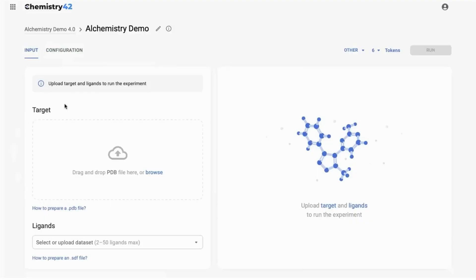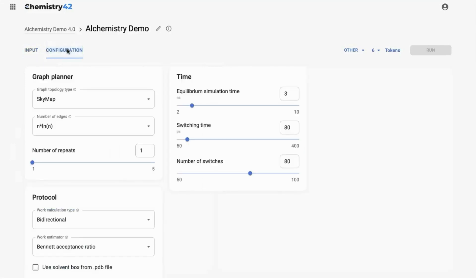Let's move to the interface of Chemistry42, where we will demonstrate how to set up and execute simulations for a protein membrane complex within Alchemistry. First, navigate to the Configuration tab and select Use Solvent Box from PDB File.